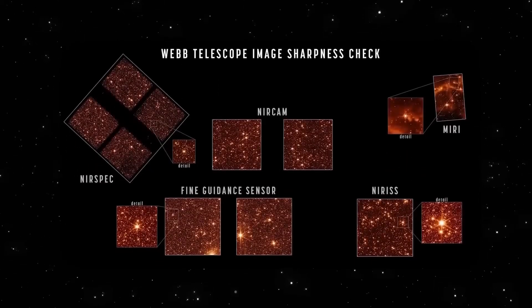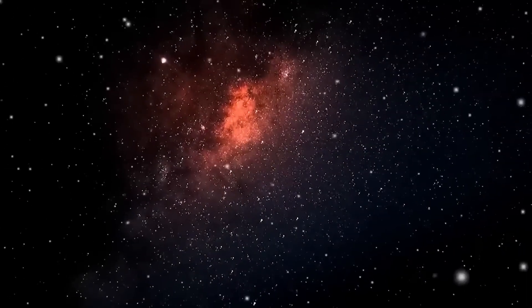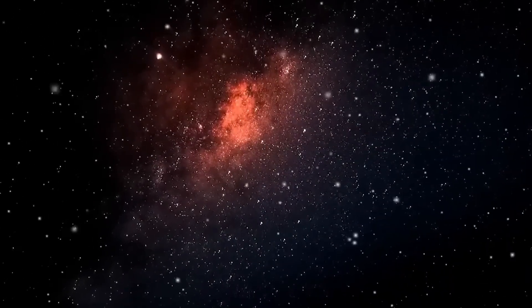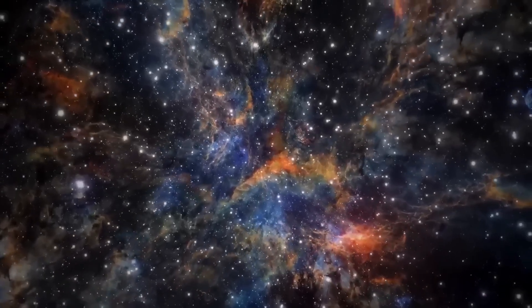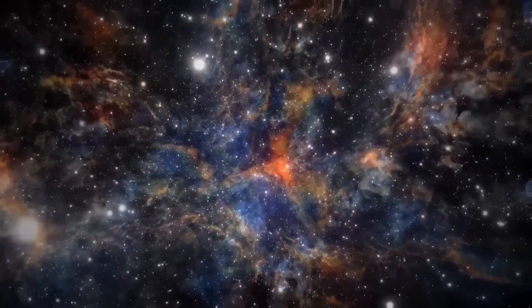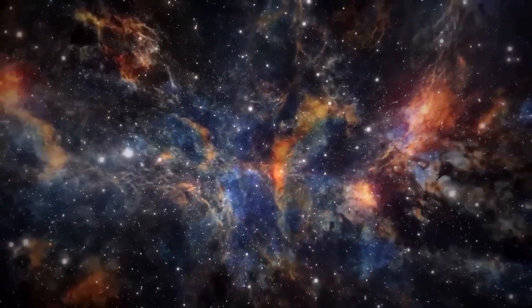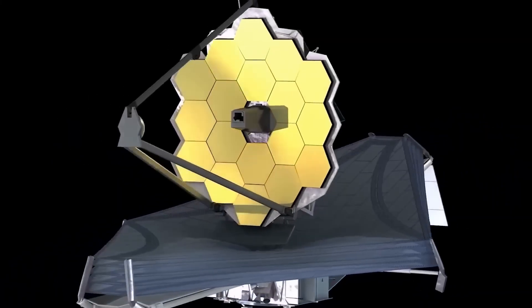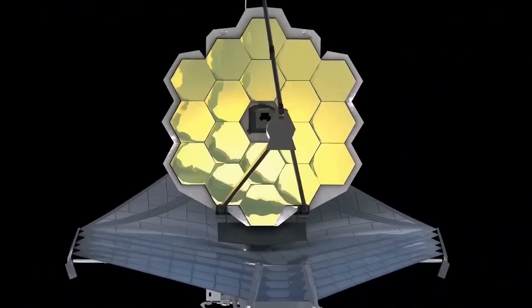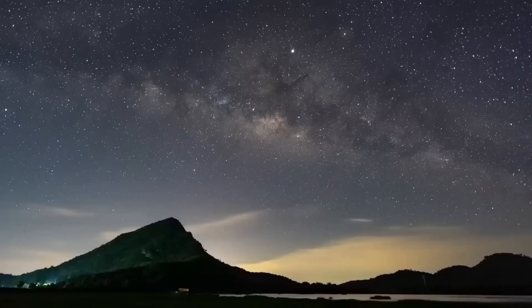Andromeda contains about a trillion stars, and when it eventually collides with our own galaxy, home to 300 billion stars, the likelihood of individual stars crashing into each other remains incredibly small. This highlights the immense distances between stars even within galaxies.